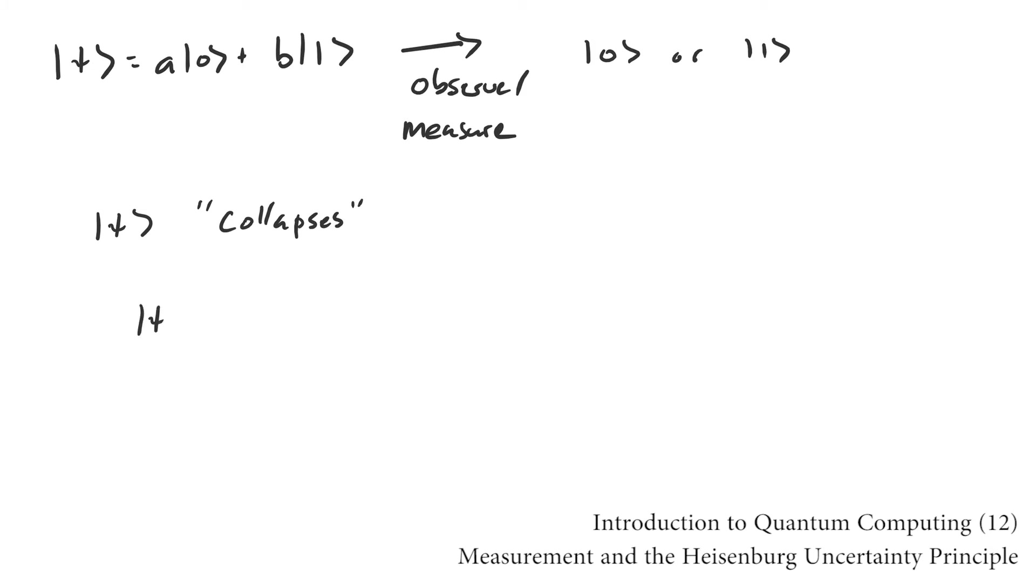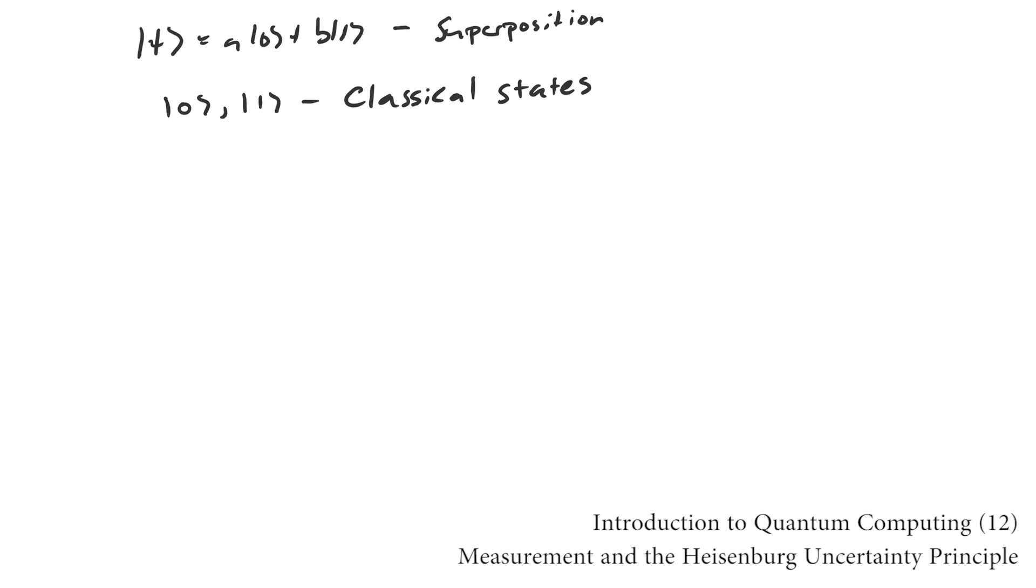Note that prior to measurement, the qubit can exist in superposition. That is, in a linear combination of the two basis states. This is bizarre, because prior to measurement, the qubit evolves according to the Schrödinger equation. But at the moment of this mysterious action, the state of the qubit instantaneously changes to one of the basis states.